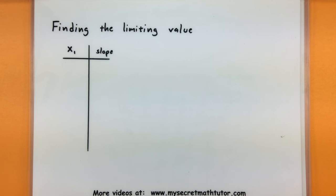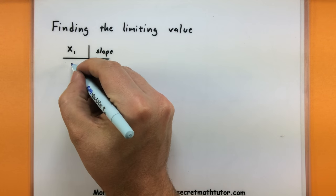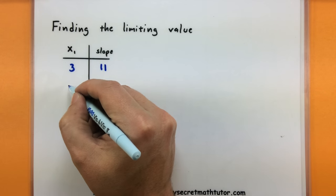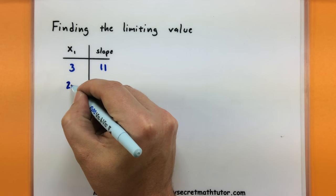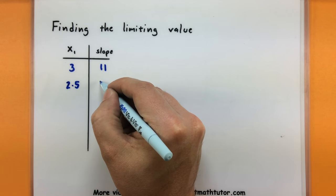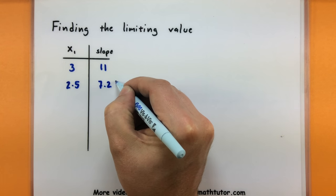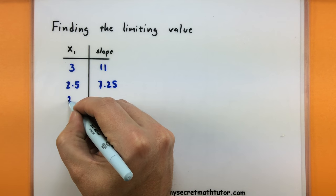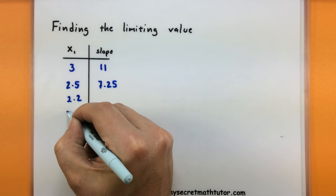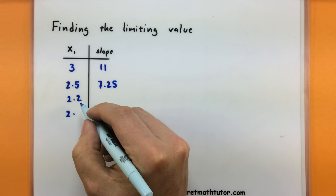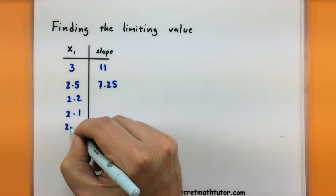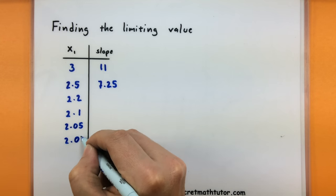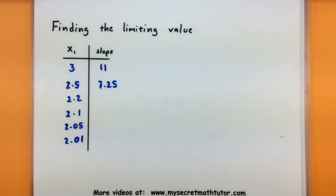So the first one that we ended up doing is when our x value was at 3. And this is when we got a slope of 11. And then the one we just did, we had our next point at 2.5. This gave us a slope of 7.25. Some other things that I tried that kept getting closer and closer is I tried 2.2, I tried 2.1, 2.05, and the last thing I tried is 2.01. And here's what I got for each of those slopes.